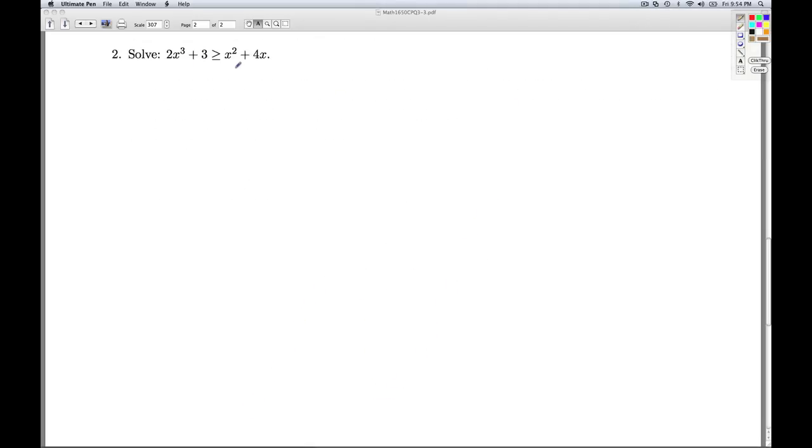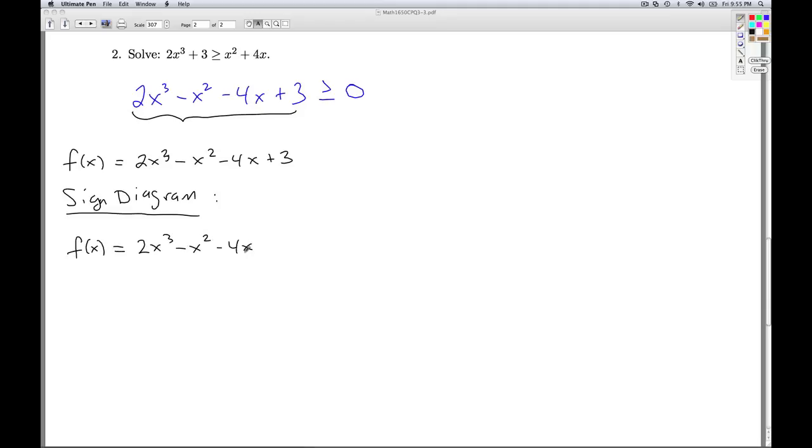All right, number 2, we're asked to solve this inequality. It's a nonlinear inequality. So we start by getting everything on one side and 0 on the other. So we'll subtract off the x squared and 4x from both sides. We'll get that. And so as usual, we're going to call this side my function f of x. And we want to make a sign diagram. So to make the sign diagram, I first need to find the zeros. I know that the graph, or I know that f of x is a polynomial function, so I know its graph is continuous. So the only way this is going to change from positive to negative is going to be if I have a zero in between.